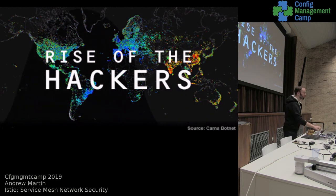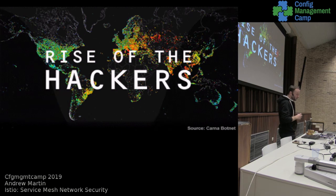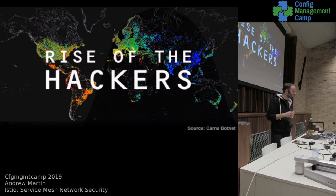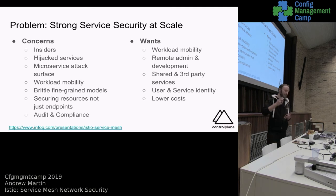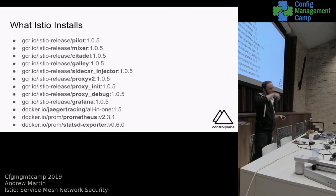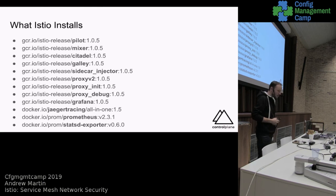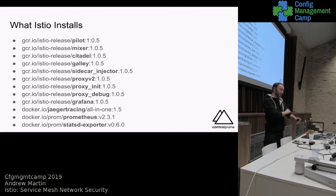Now let's examine our threat model. We have a lot of potential attack vectors in a modern web application: insiders, hijacked services, microservice attack surfaces, workload mobility, brittle fine-grained models, and audit and compliance concerns. Courtesy of Louis Ryan, the Istio team lead, this is the threat model we're looking at. Istio has an à la carte option where one is able to cherry-pick components. The reality in my opinion is that one is better off standing up entirely segregated production-like infrastructure and testing it as if it were a pre-prod environment, because there are lots of moving parts.